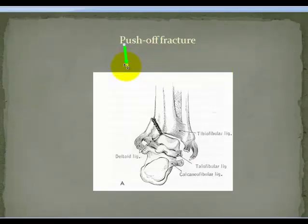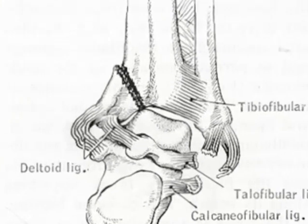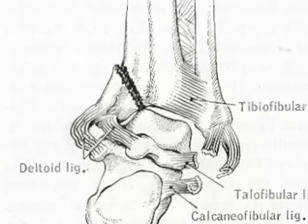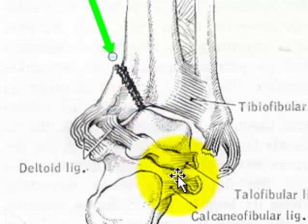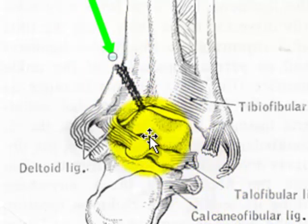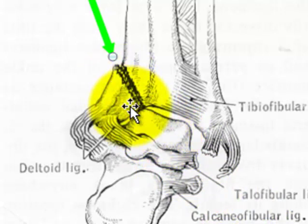If the ankle goes beyond its normal range of motion, a fracture will occur. This particular fracture is known as a push-off fracture. It's called a push-off fracture because this bone, known as the talus, pushes off into this bone, known as the tibia.